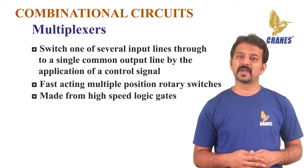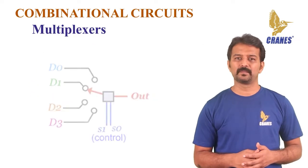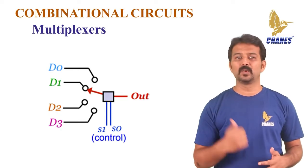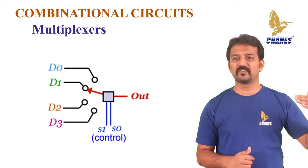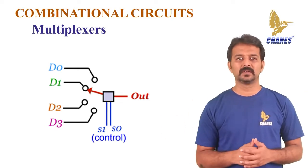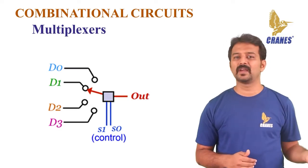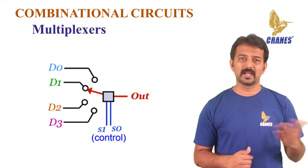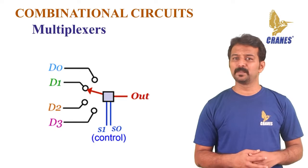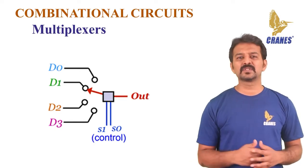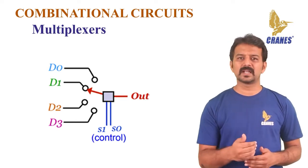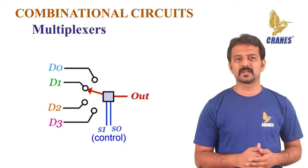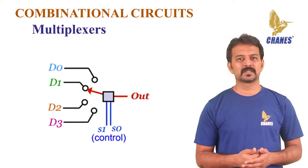The best way to understand multiplexers is by looking at the single-pole multi-position switch as shown. The switch has multiple inputs D0, D1, D2, and D3 but only one output pin. The control knob is used to select one of the four available data inputs, and this data will be reflected on the output side. This way the user can select the required signal among the many available signals. This is a plain example of a mechanical multiplexer, but in electronic circuits which involve high-speed switching and data transfers, we should be able to select the required input very fast using digital circuits. The control signals S1 and S0 do exactly the same — they select one input of the many available ones based on the signal provided to them. The three basic terms on any multiplexer are the input pins, output pins, and the control signal.